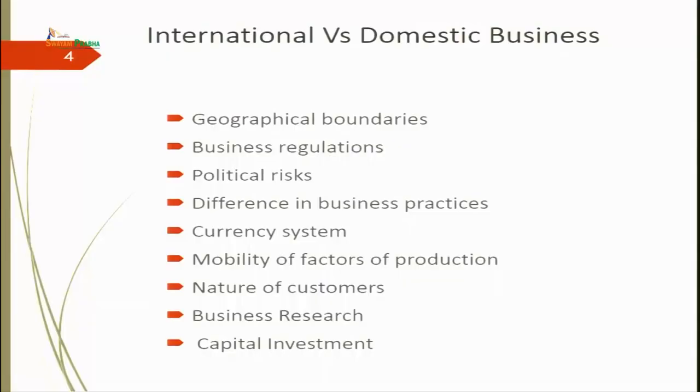Let's start with Lecture No. 2 and discuss the differences between international business and domestic business. The first basis of difference is geographical boundaries. In international business, there is no such demarcation of geography. You can do business wherever you want, depending upon the kind of country, economy, and resources you are seeking. For example, Fujitsu is a Japanese company manufacturing hard disks, RAM, and motherboards. Though it is a Japanese company, they are manufacturing products in China, Vietnam, Korea, and Malaysia. There is no boundary.